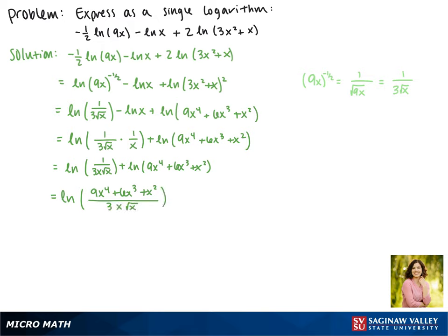Now since each of these terms has a factor of x, one factor of x can cancel from each one, so the one on the bottom cancels completely. This one becomes a 1, this one becomes a 2, and this one becomes a 3. This gives us our final answer of the natural log of 9x cubed plus 6x squared plus x, all over 3 times the square root of x. This can't be simplified anymore, so this is our final answer.